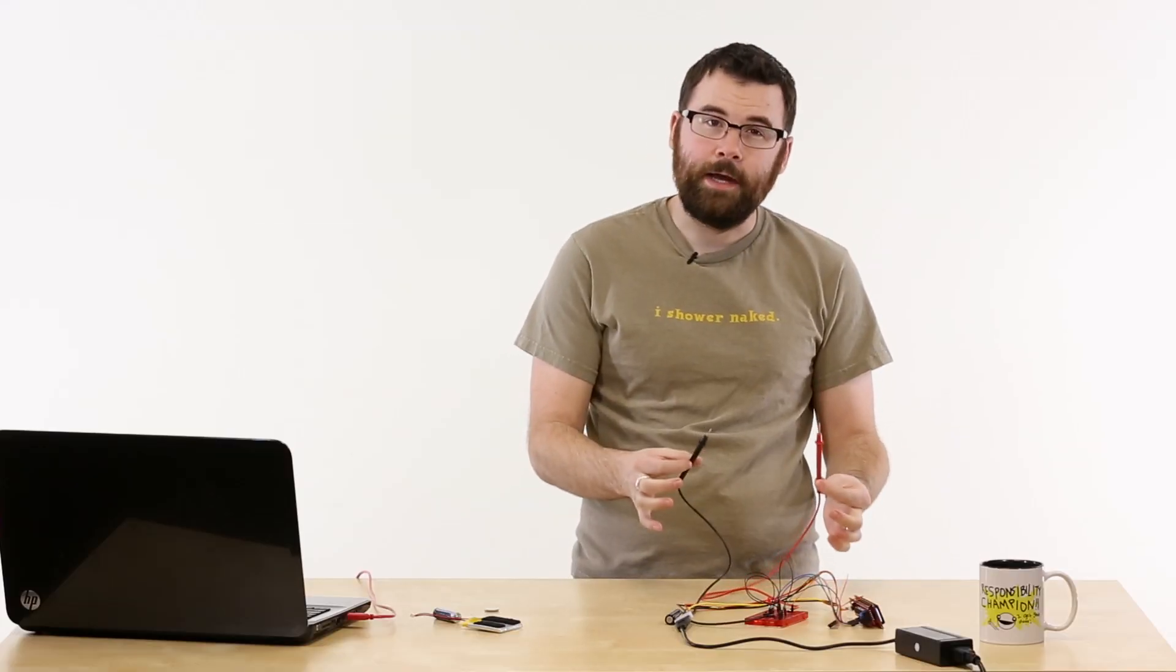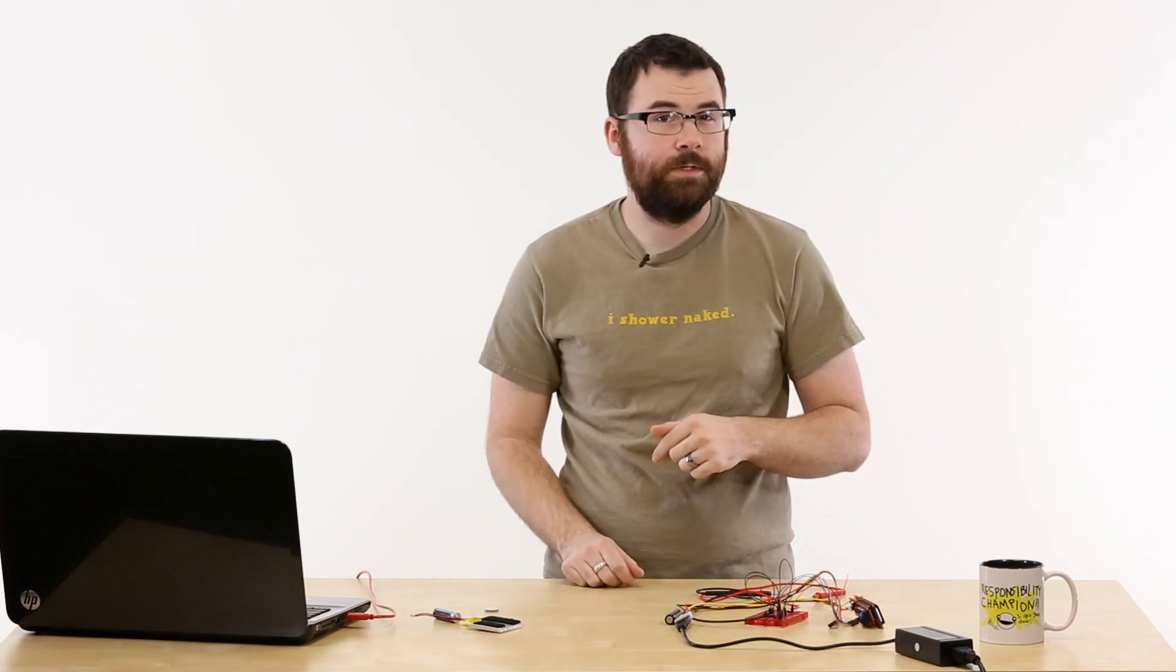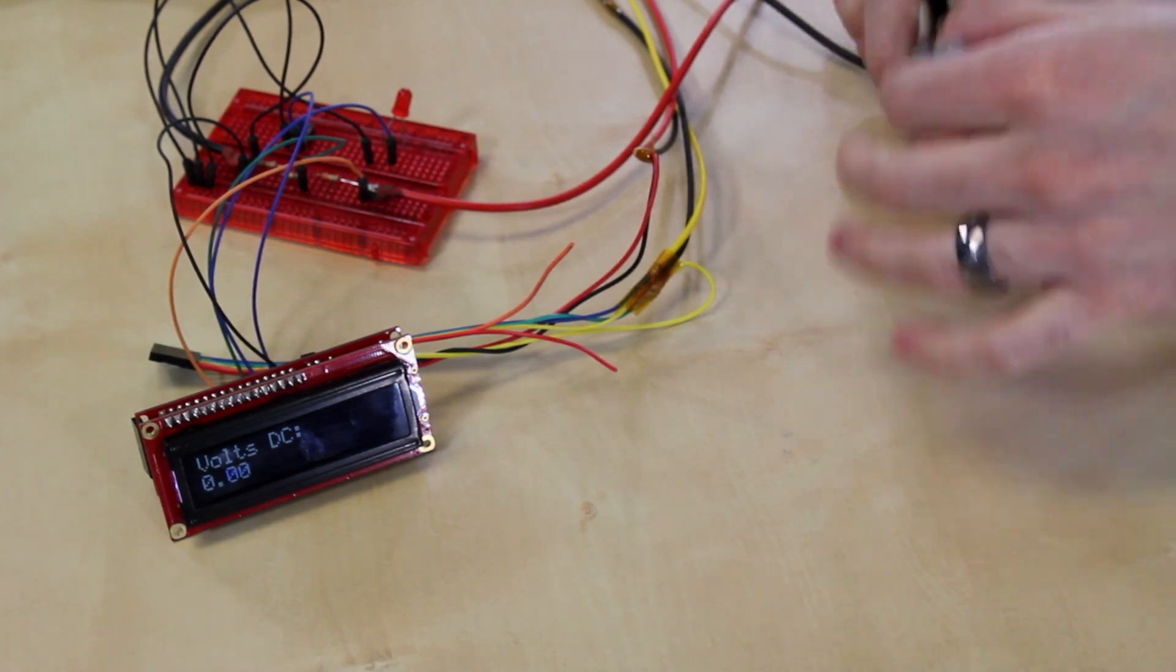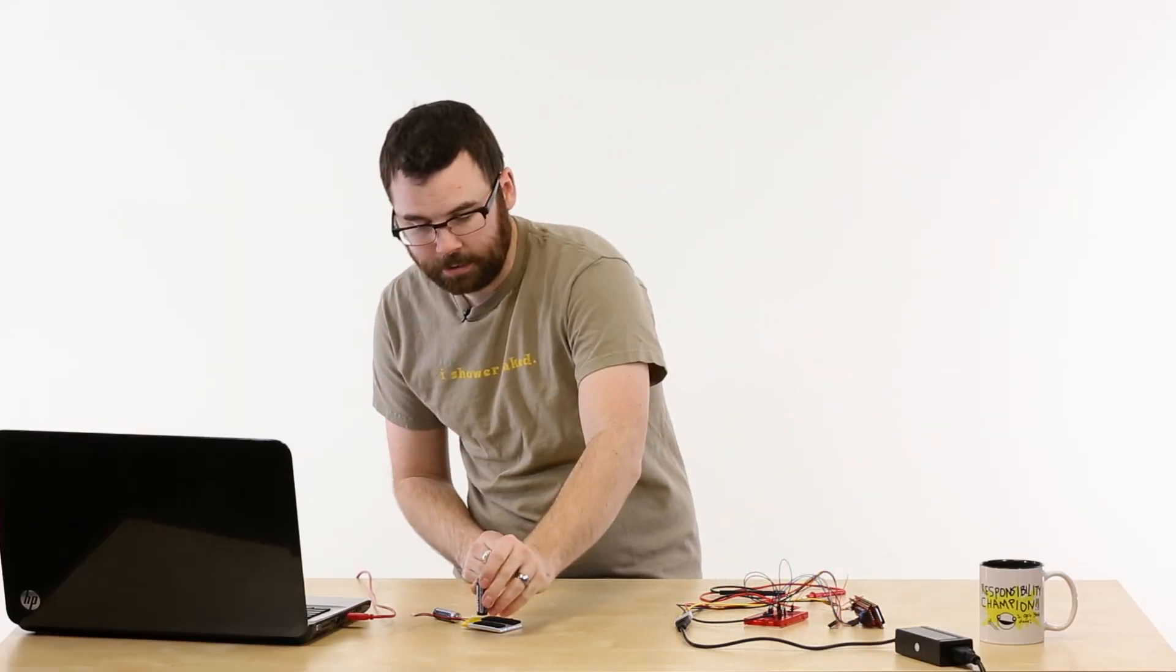And if we connect a battery up to these probes, we can actually test the voltage on the battery. And you can see this battery reads about 1.2, 1.23 volts, so this one is a dead battery.